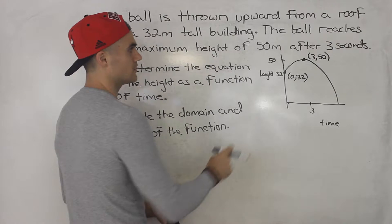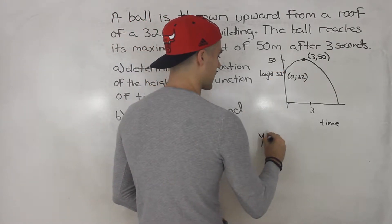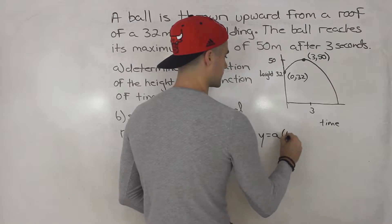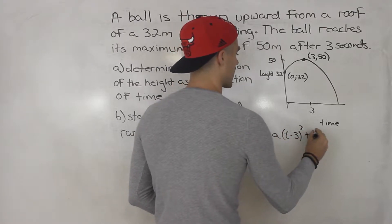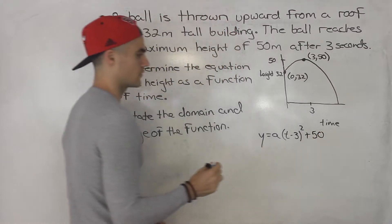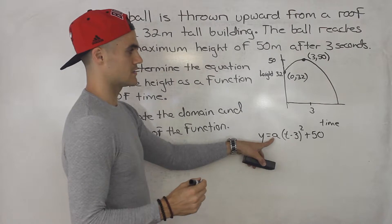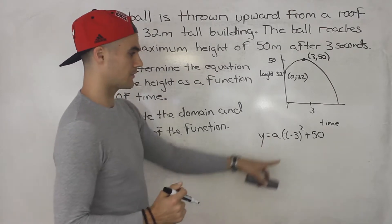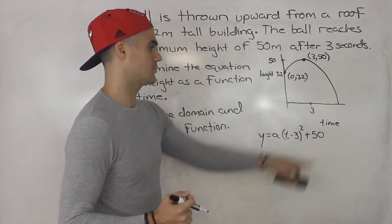Let's find this equation. So notice that we're given the vertex of this parabola. So we know that this parabola is going to be in this format. We put it in vertex form. We don't know what that a value is, but we know that the vertex is three and 50. So we could input that right there.